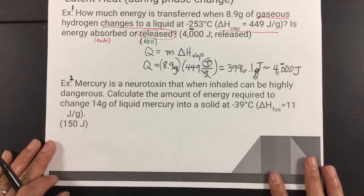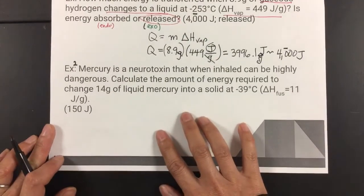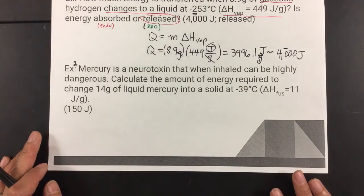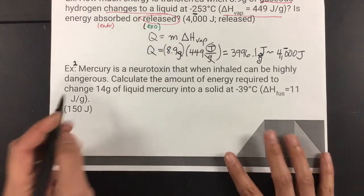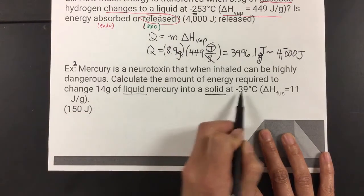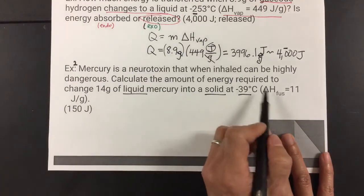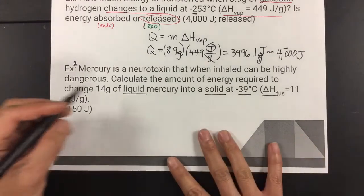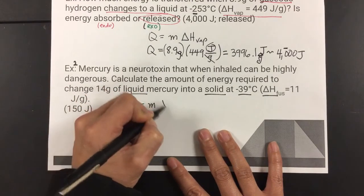Okay. Look at the next problem. Mercury is a neurotoxin that, when inhaled, can be highly dangerous. Calculate the amount of energy required to change 14 grams of liquid mercury into a solid. Again, notice you're looking at liquid turning into a solid at the same temperature. No temperature change whatsoever. And then the other hint is your ΔH fusion value. So, that tells us that we're going to use the phase change equation versus the no phase change equation.